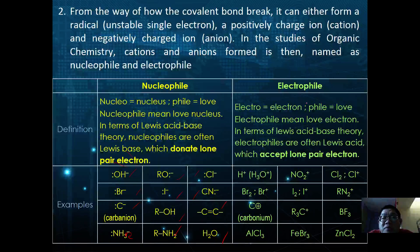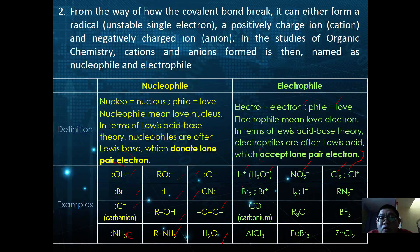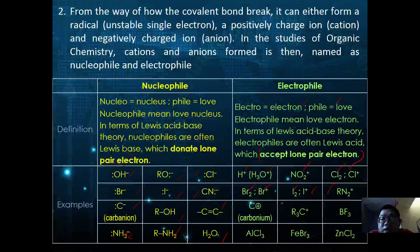Electrophiles means electron-loving. In Lewis acid-base theory, electrophiles are Lewis acids — they accept lone pair electrons. Examples include: H⁺, hydronium ion, nitronium ion, halogens (Cl2, Br2, I2) and their cations, carbocations, alkyl ions, boron trifluoride (BF3), aluminium chloride (AlCl3), and zinc chloride (ZnCl2).